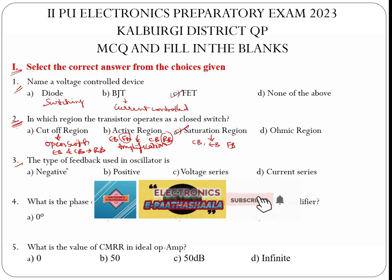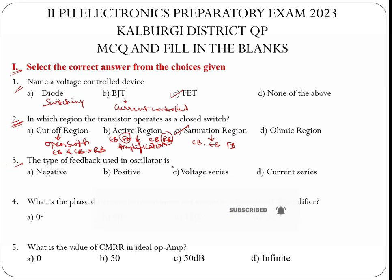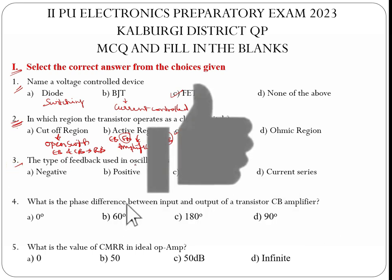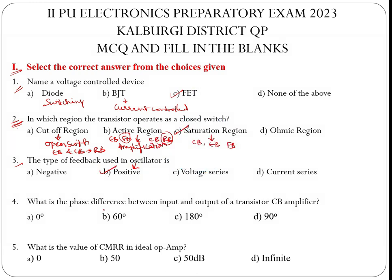Third question: The type of feedback used in an oscillator is positive feedback. Negative feedback is used in amplifiers. Voltage series and current series are also types of negative feedback.